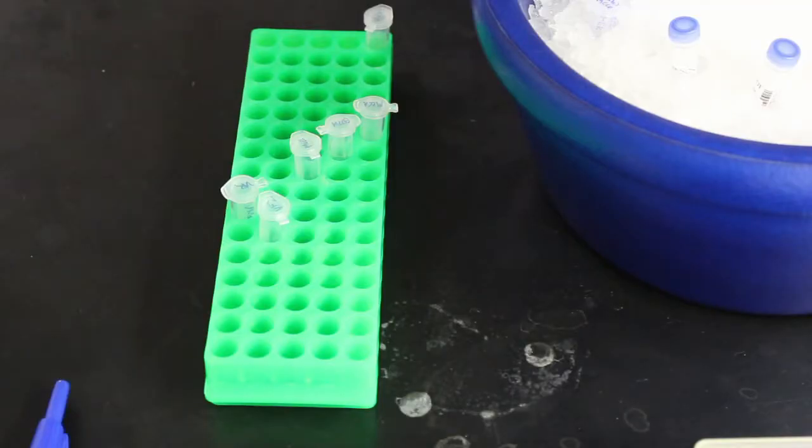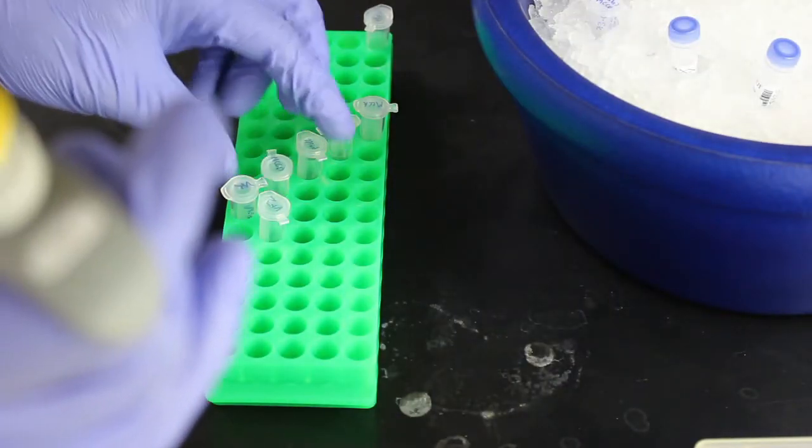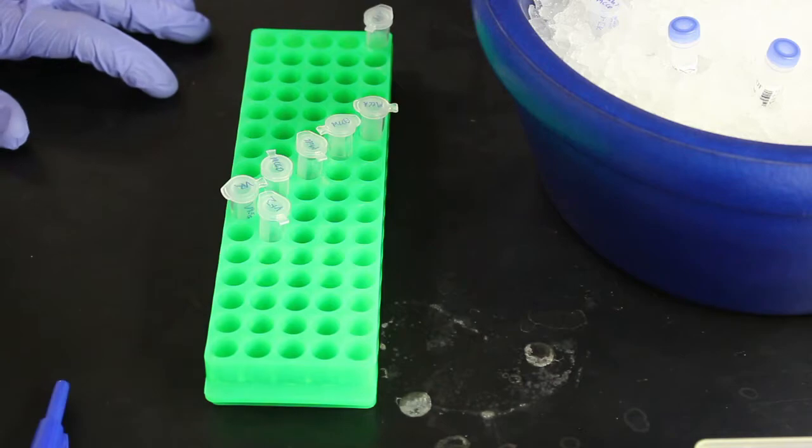In each tube, add enough of the DNA to be sequenced so that there is one kilobase of DNA. Then, add enough USP water to bring the total amount up to 10 microliters.